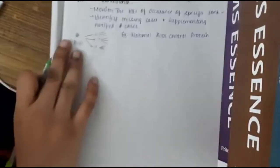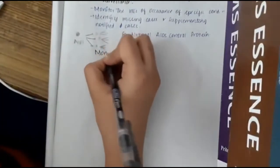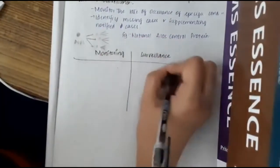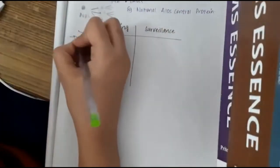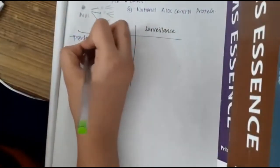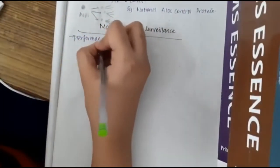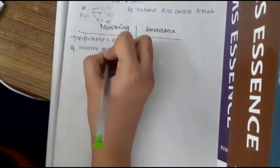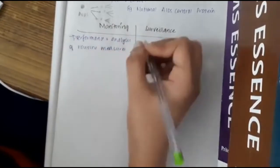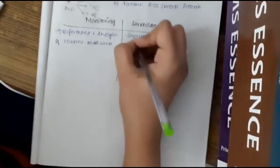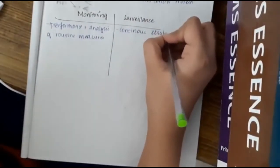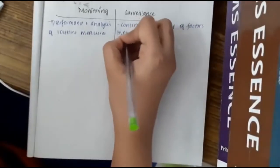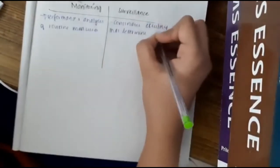There is a distinction between monitoring and surveillance. Monitoring is the performance and analysis of routine measures. Surveillance is the continuous scrutiny of factors that determine the occurrence and distribution of disease.